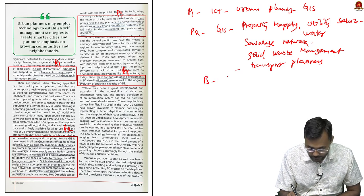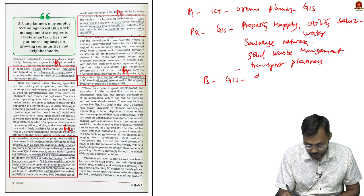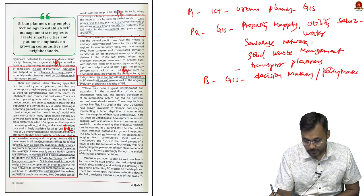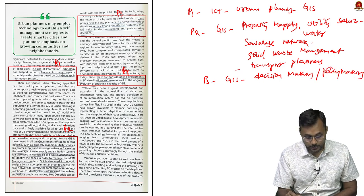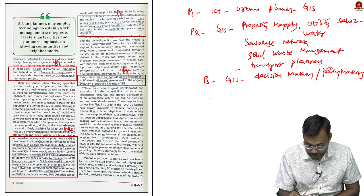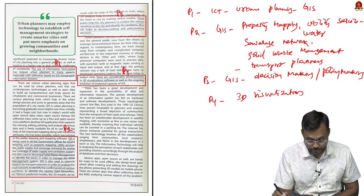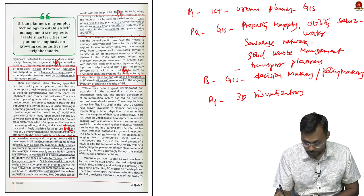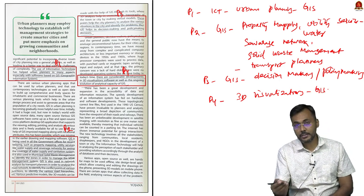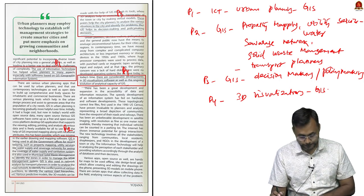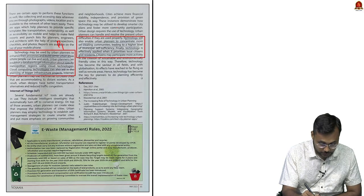Paragraph 3 explains the importance of GIS: it helps in decision making and policy making through all this collected data. Paragraph 4 discusses 3D visualization of GIS data, which enhances the technology further. These are some key points helping urban planning.